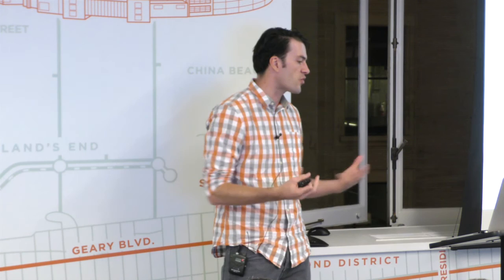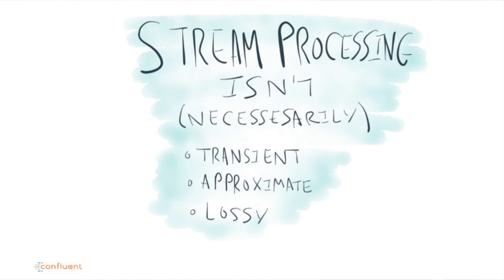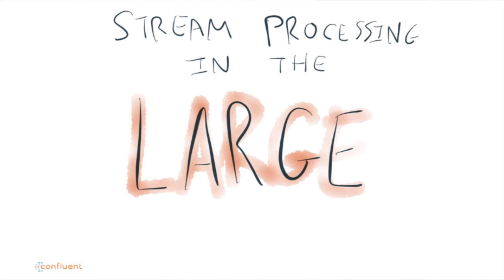What I don't mean by stream processing, at least for this talk, is something transient, lossy, or approximate. A lot of earlier technologies, maybe 10 years ago, would do a lot of approximation and throw data on the floor if it came too fast. But if you write computer programs, mostly they have to get the right answer. There's no inherent reason this model can't be as correct as batch or request-response — it takes a little more technology, but it's certainly possible.